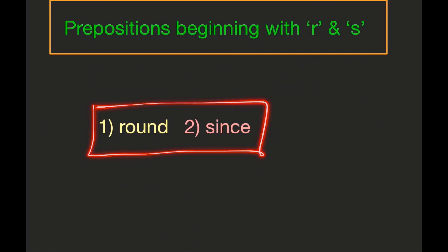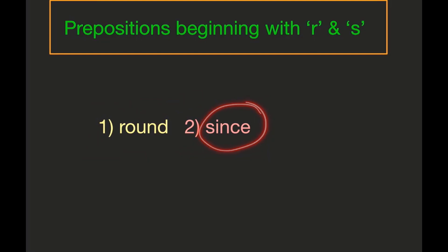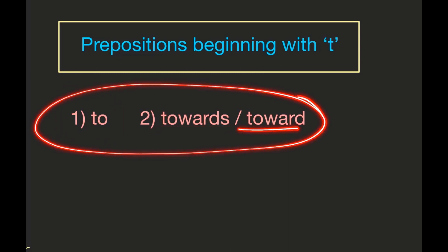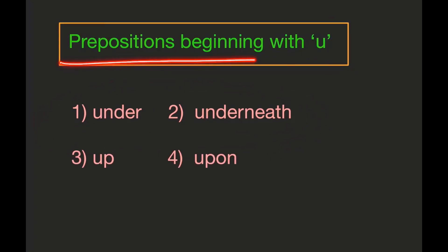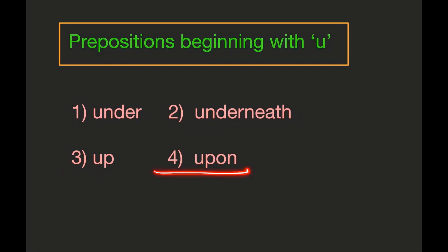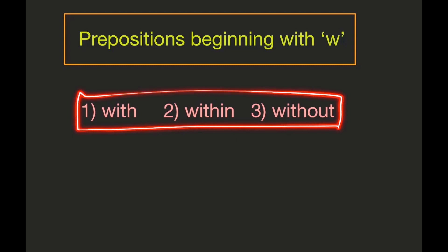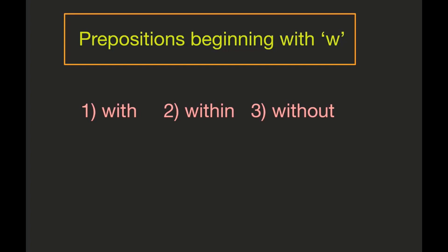Here we have two prepositions: 'round' beginning with R, and 'since' beginning with S. Prepositions beginning with T: 'to,' 'towards,' and a third one. Prepositions beginning with U: 'under,' 'underneath,' 'up,' and 'upon' — four prepositions, all very frequently used in English. Prepositions beginning with W: 'with,' 'within,' and 'without' — these three are also very, very important prepositions.